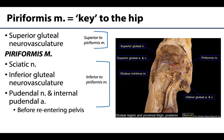Here is the piriformis muscle belly, and you can see the tendon heading towards the greater trochanter right here. The greater sciatic notch would be right around this region here.